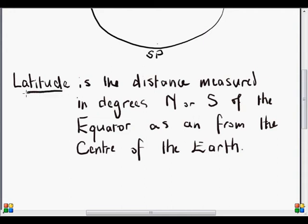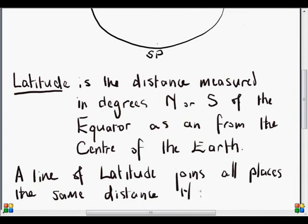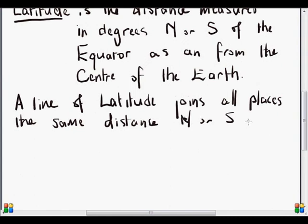Right, so that is latitude. And then a line of latitude joins all places which is the same distance, north or south of the equator.